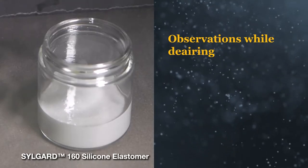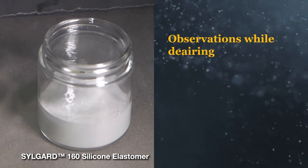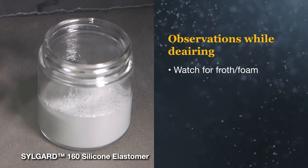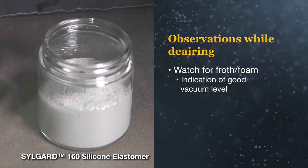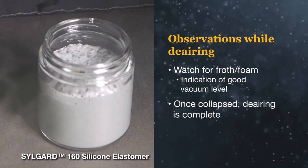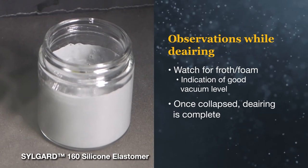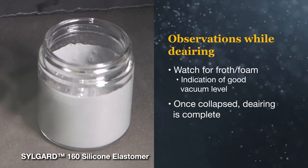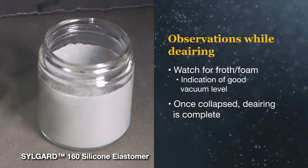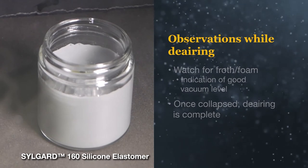As the pressure in the vacuum chamber decreases, bubbles in the silicone will get larger and rise to the surface. If the material has a lot of air, it will appear to froth or foam. This is normal and typically means you are at a good vacuum level for de-airing. The froth will rise and then collapse, and once it has collapsed, de-airing is complete. There may still be a few bubbles coming out of the silicone after this point, but these will dissipate once air is released back into the chamber and won't impact material performance.